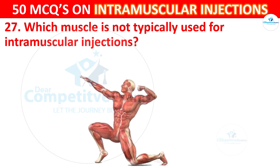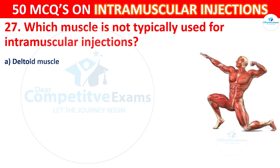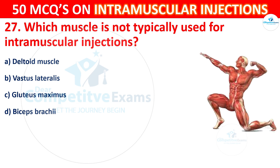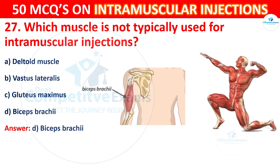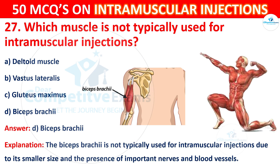Options for Question 27 are: deltoid muscle, vastus lateralis, gluteus maximus, or biceps brachii. The correct answer is D, biceps brachii. The biceps brachii is not typically used for intramuscular injections due to its smaller size and the presence of important nerves and blood vessels.